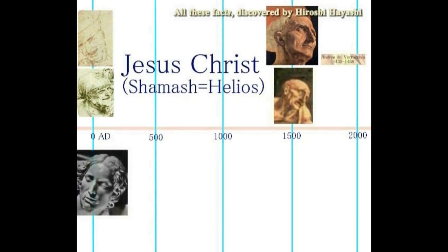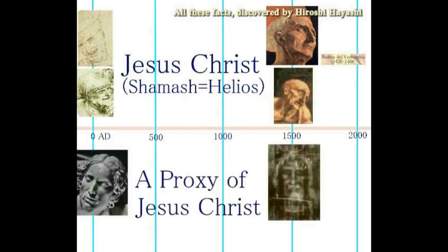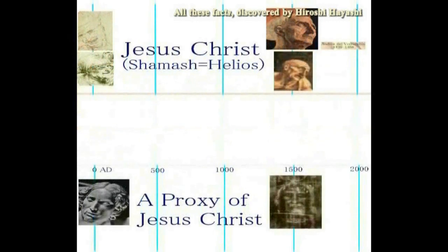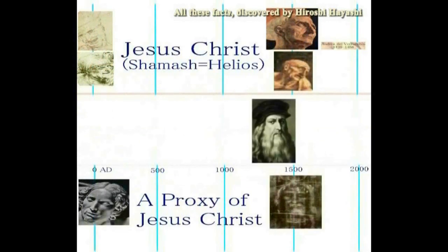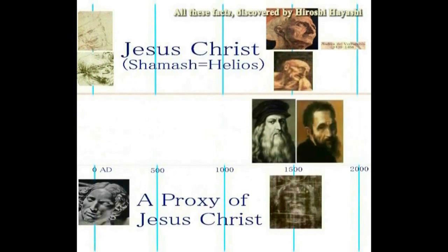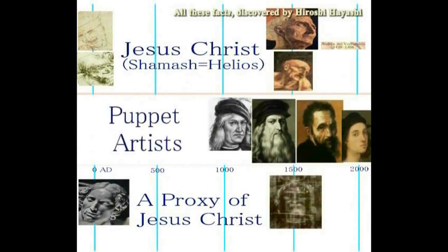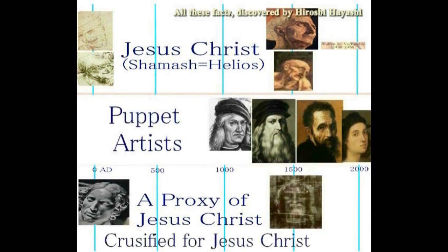そして数々の作品を残しました。その間でうごめいていたのが操り人形芸術家ということになります。シノレイティとダビンチは、髭と鼻を除いて全く同じです。つまり、シノレイティの一人二役がダビンチであったということになります。